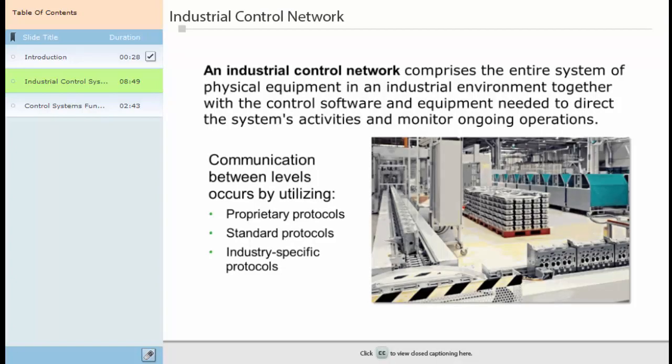An industrial control network comprises the entire system of physical equipment in an industrial environment, together with the control software and equipment needed to direct the system's activities and monitor ongoing operations. Industrial networks are quite different from traditional IT or enterprise networks, although some similarities do exist.